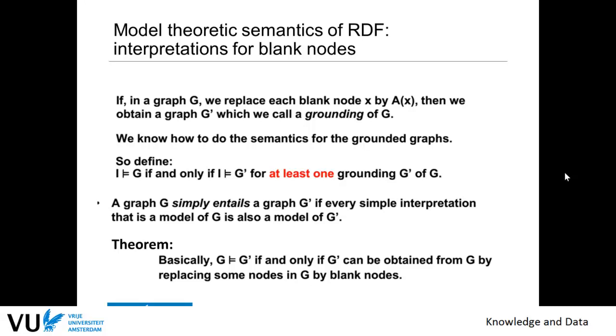So the first thing you can do is rewrite your graph by taking any resource identifier name for the variable, for the blank node, and then you look for subsets as we did in the previous one, in the previous assignment.